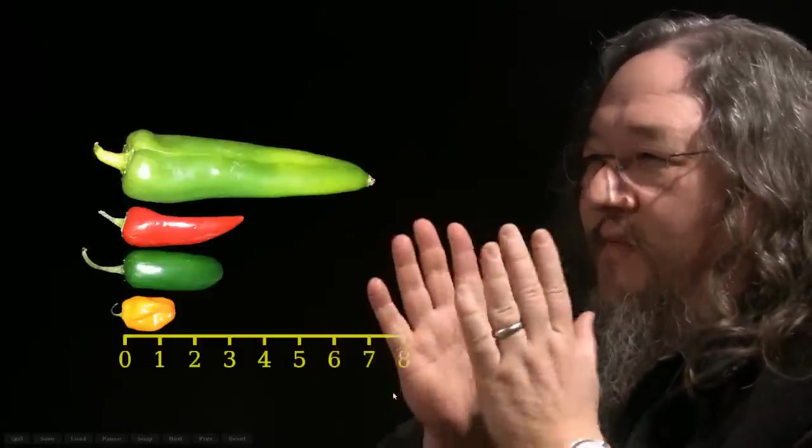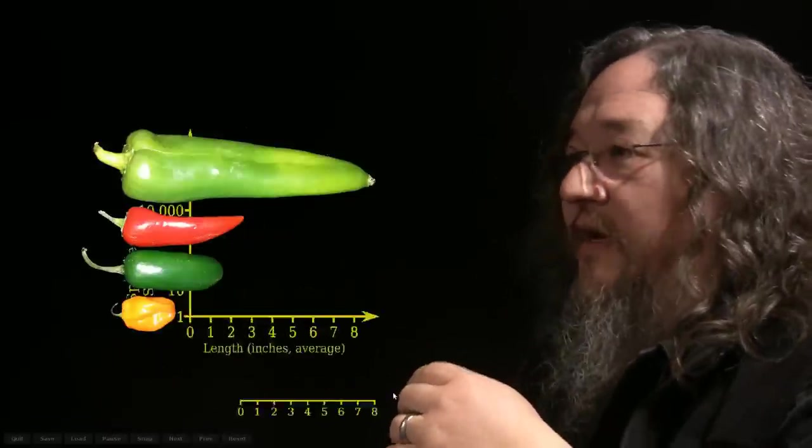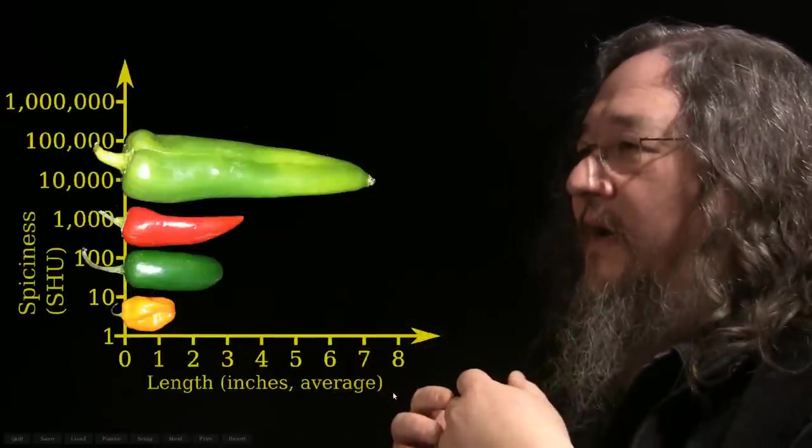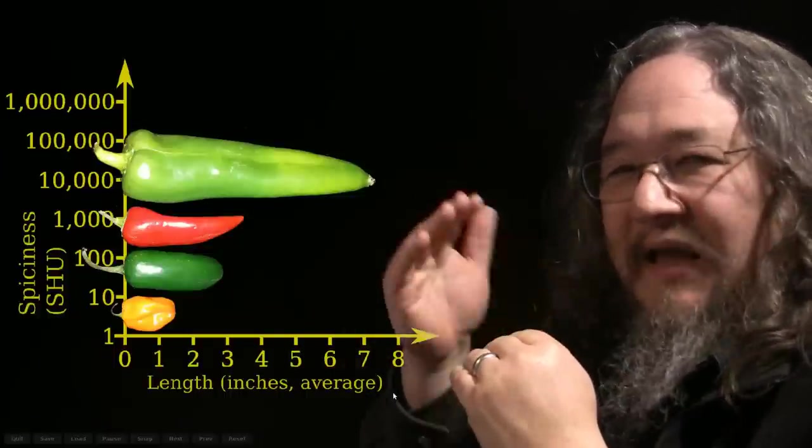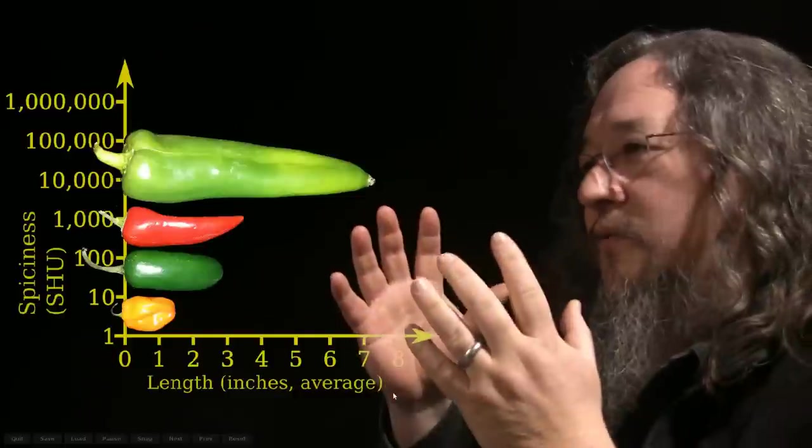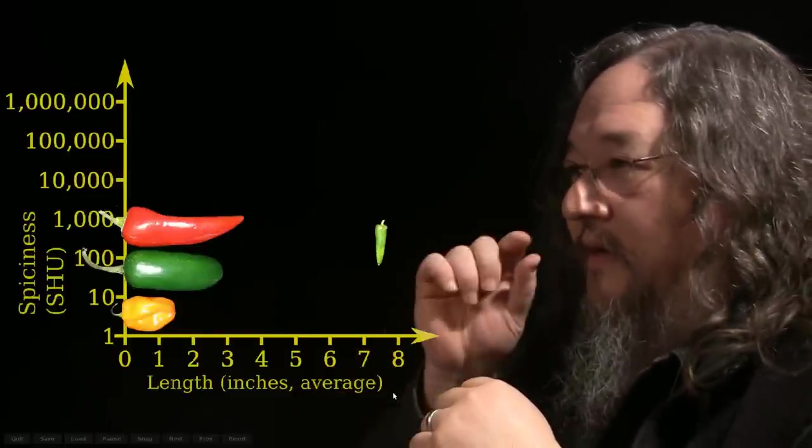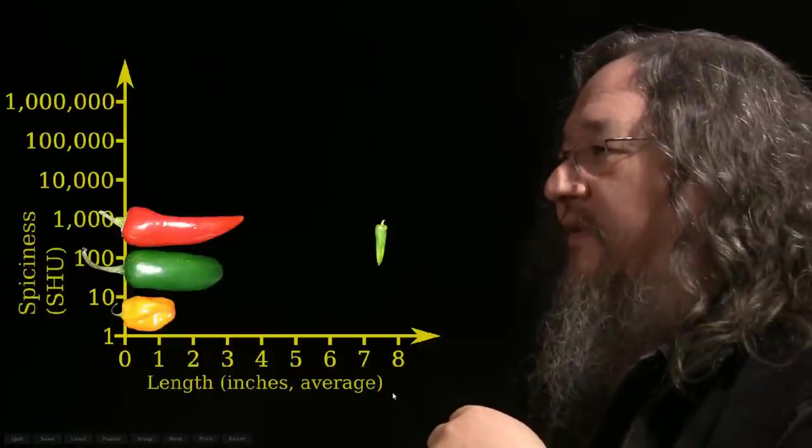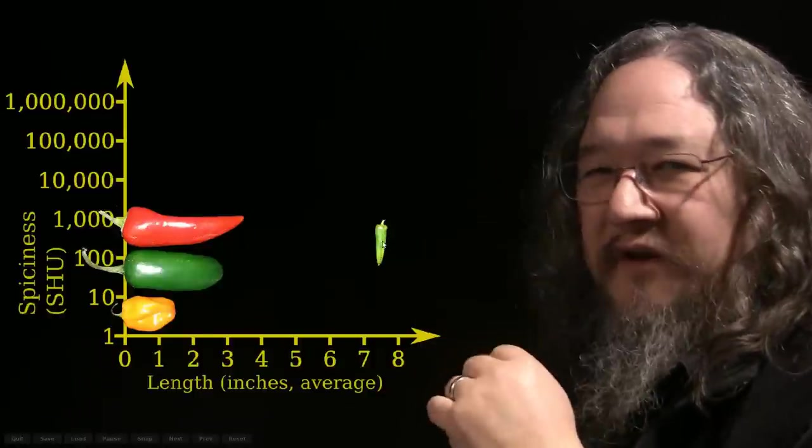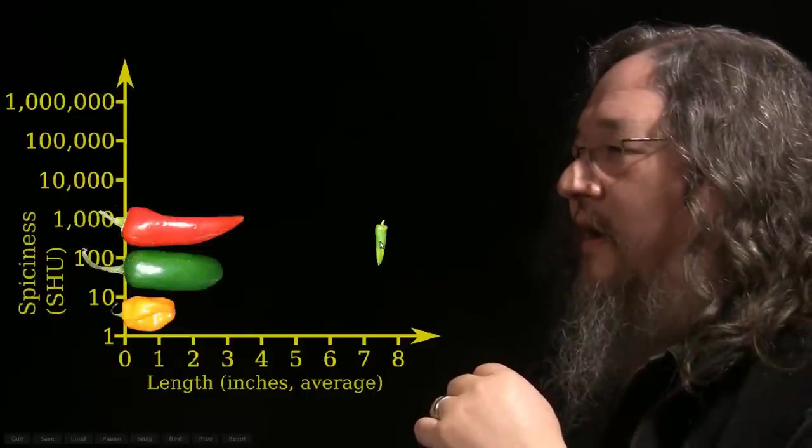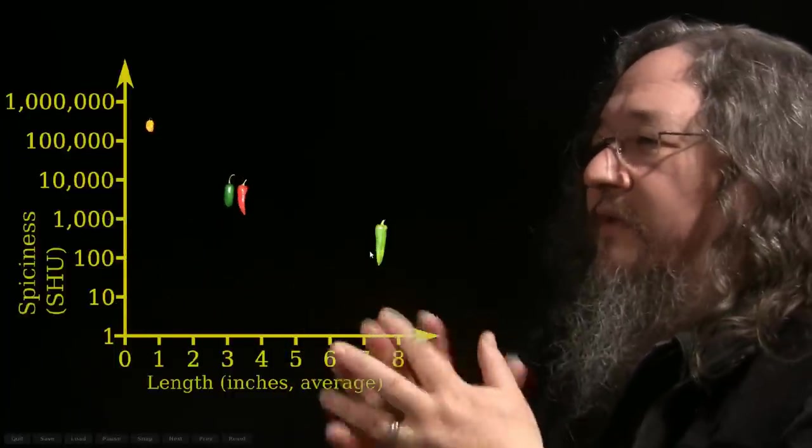But we could easily want to convey more information about our chilies than just their length. We might want to say how hot are they? How spicy? But now we can't really do that, because we already used the vertical axis for stacking up our chilies. Well, we can abstract harder, take these chilies down to something more like a point. Not really a point. And now we see that the chili is still around seven and a quarter inches, and its spiciness in these crazy Scoville units is maybe five hundred or a thousand, or something like that.